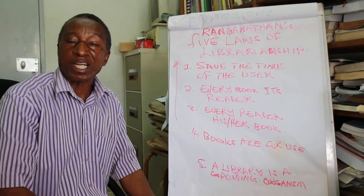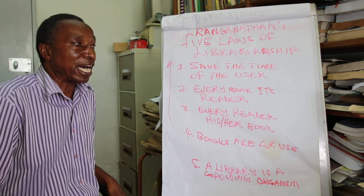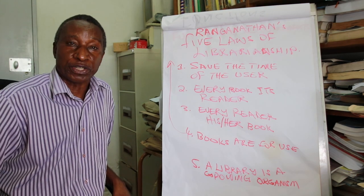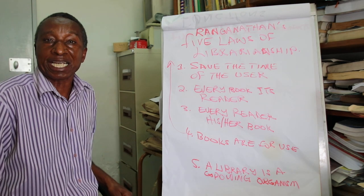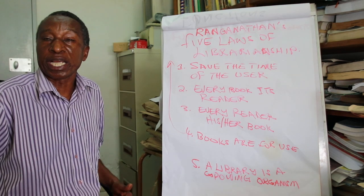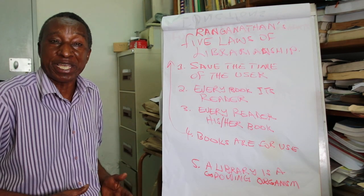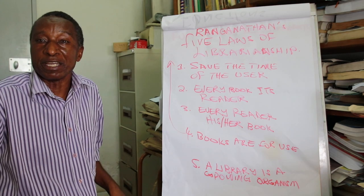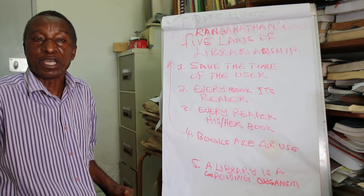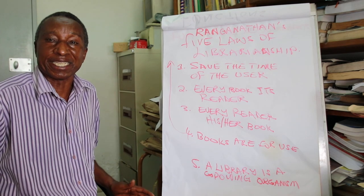Good afternoon, welcome to another series of lectures in LIS 2010, which is the organization of information resources — basically looking at cataloging, classification, and information retrieval. The last time we were looking at the functions of a library catalog, and we noted that the major function is information retrieval, to enable a library user to retrieve information either by author, by title, or by a given subject.